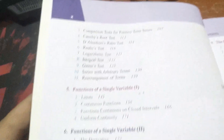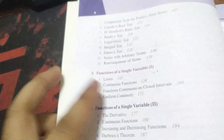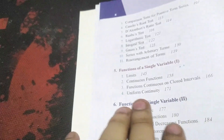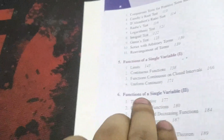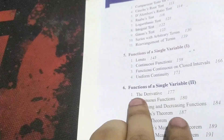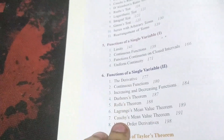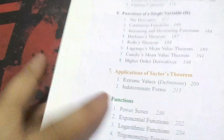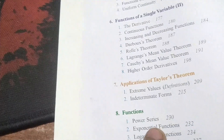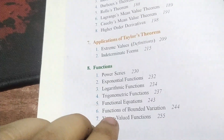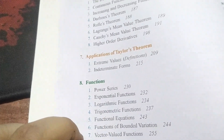After that, functions of a single variable: limits, continuous functions, functions continuous on closed intervals, uniform continuity, derivatives of continuous functions, Lagrange's mean value theorem, higher order derivatives, application of Taylor's theorem, indeterminate forms, and then functions — power series and exponential functions. Perhaps this is the rigorous definition of power series and exponential functions, but defining them rigorously could take a full semester.